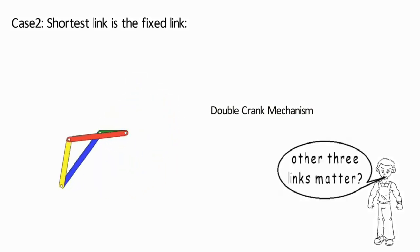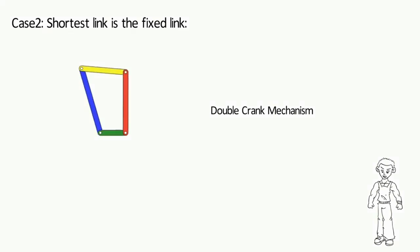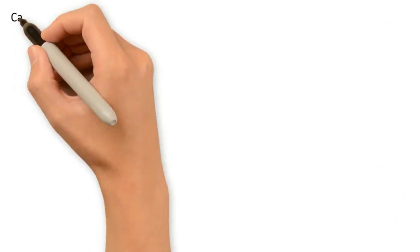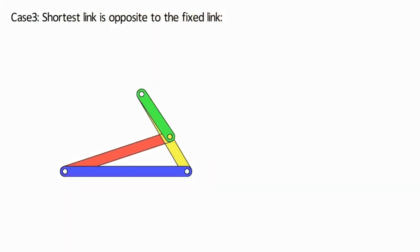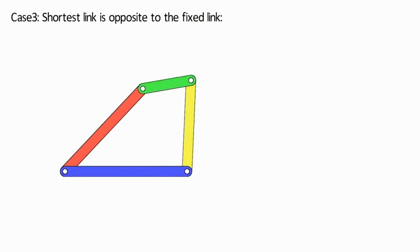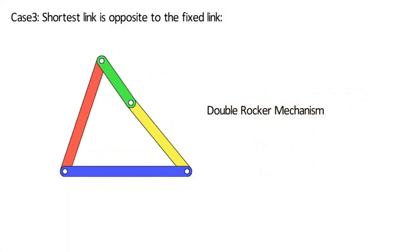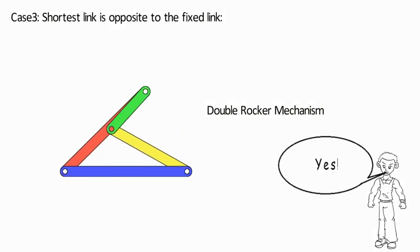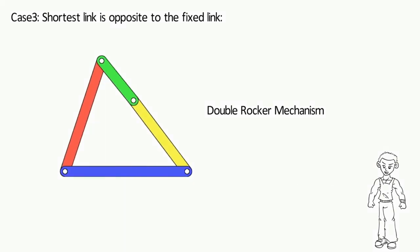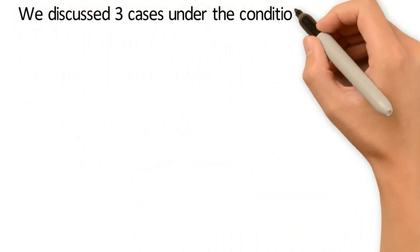Does the position of the other three links matter? No, the position of the other three links won't affect the nature of the mechanism. Case 3: the shortest link is opposite to the fixed link. The mechanism so obtained is known as the double rocker mechanism. The coupler, that is the green link which is also the shortest link, is the one rotating in this mechanism.